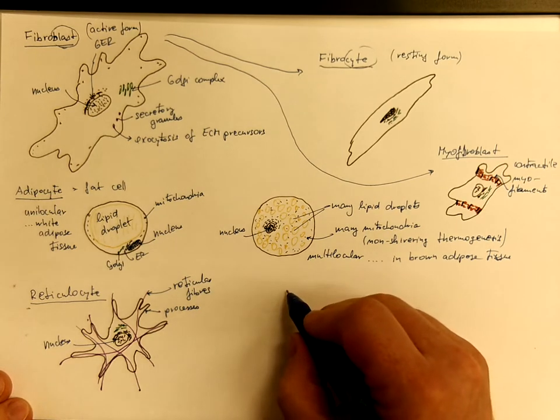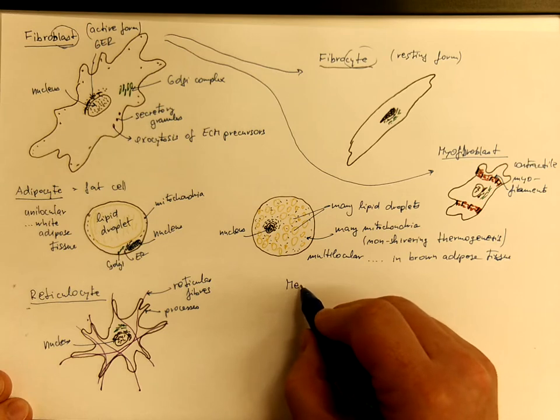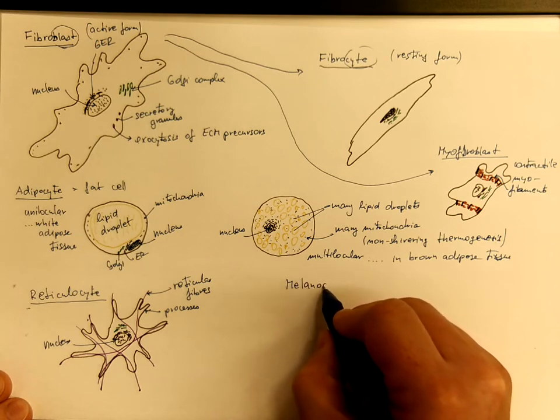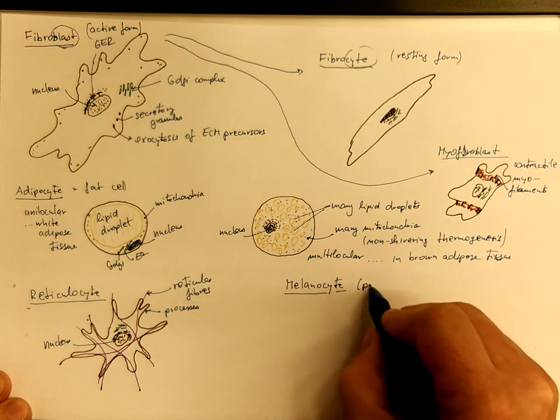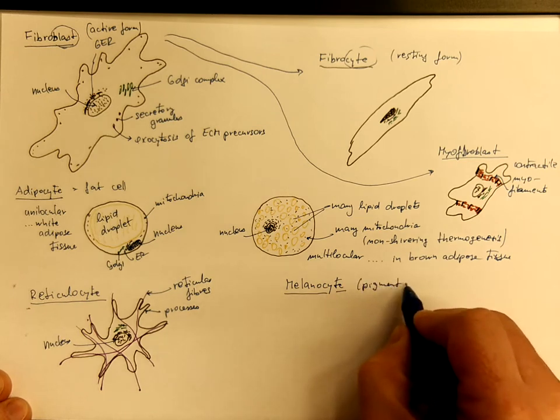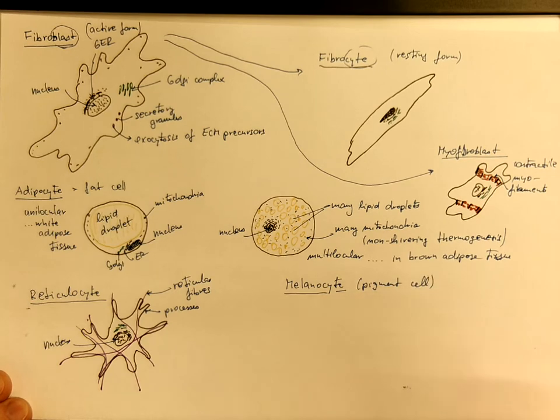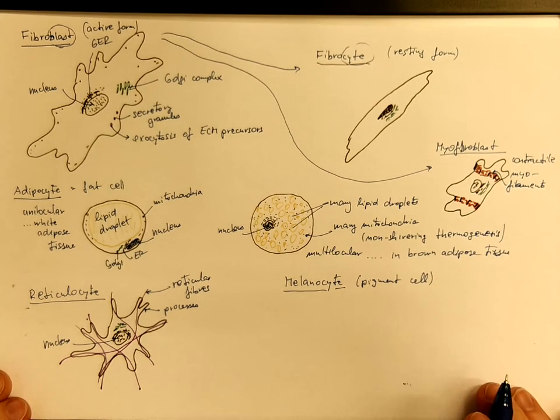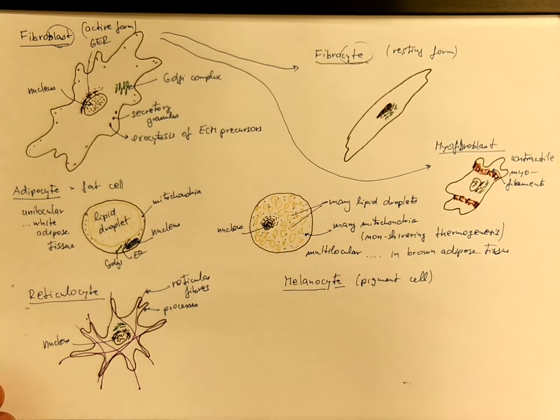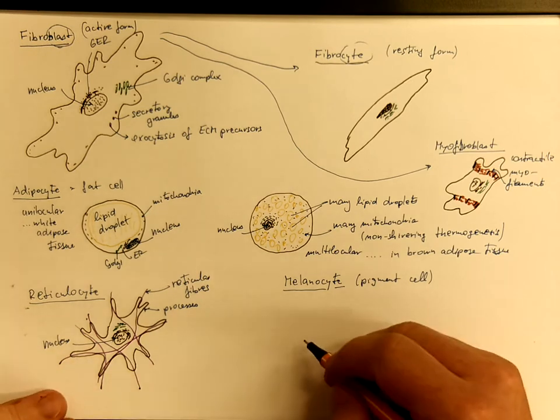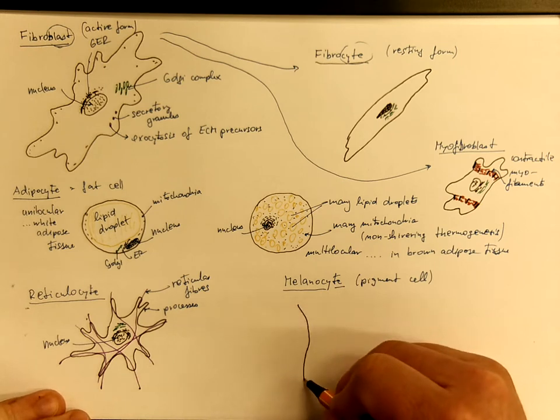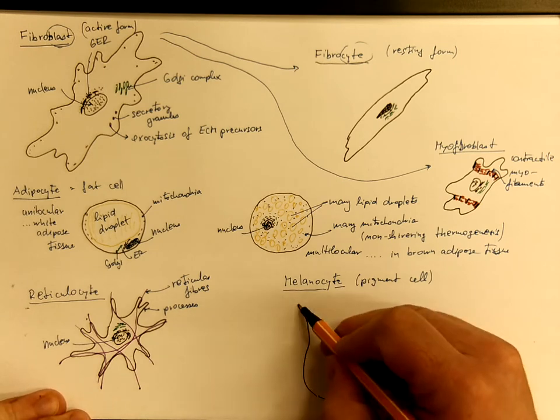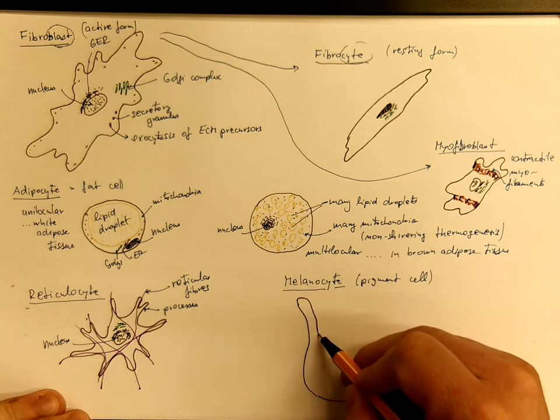Another cell type is the melanocyte. You may call it pigment cell, such as the cells on the basal layer of the epidermis. They have a cell body from which cell processes are radiating. So sometimes they are compared to octopus.